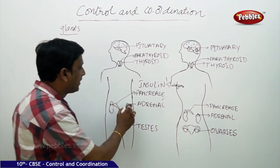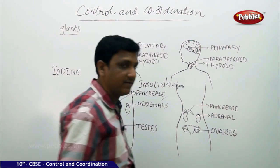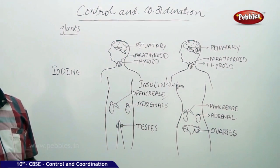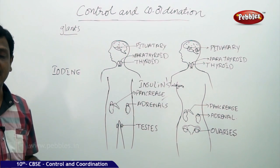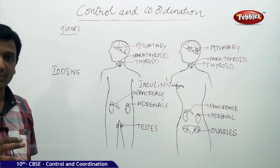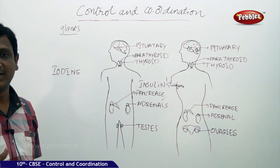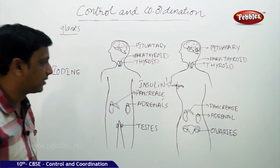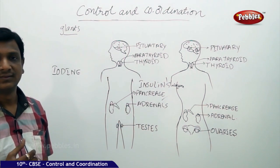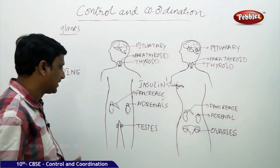On top of the kidneys, we have adrenal glands. The adrenal glands secrete adrenaline, which helps in certain situations by preparing your body to escape or to fight — the fight-or-flight response.